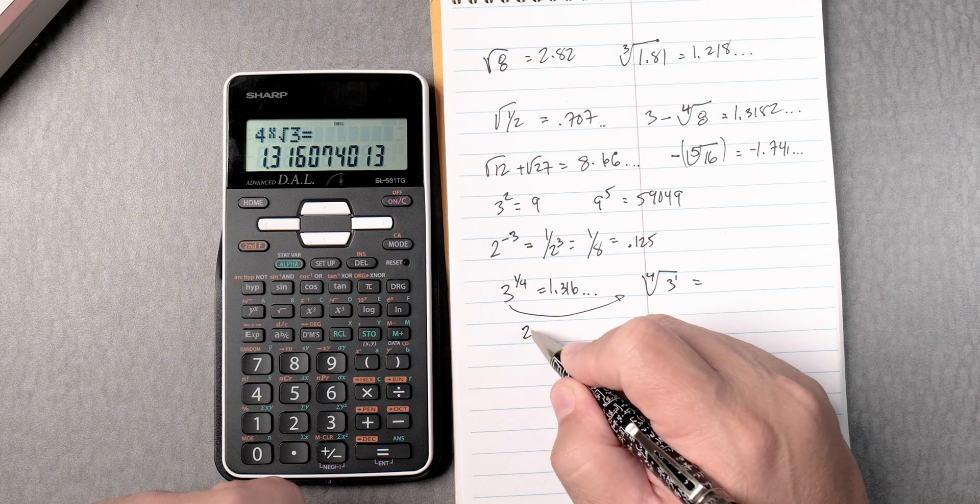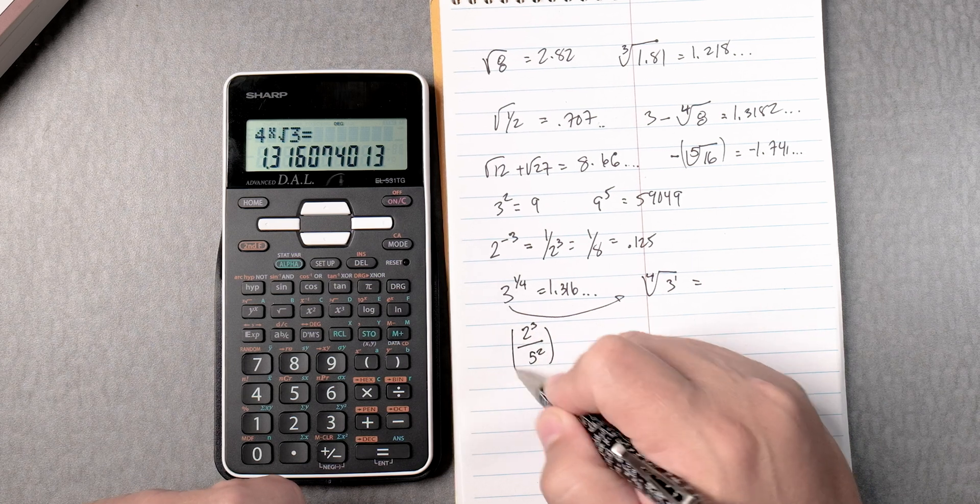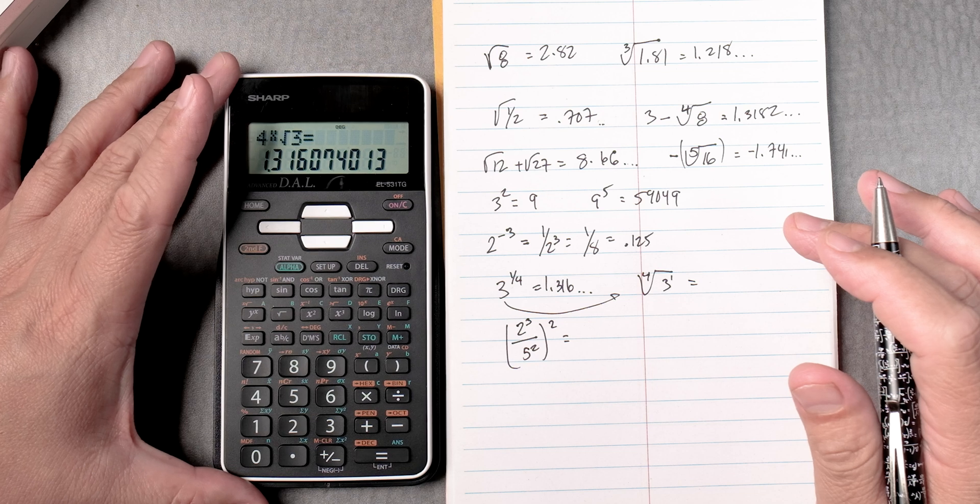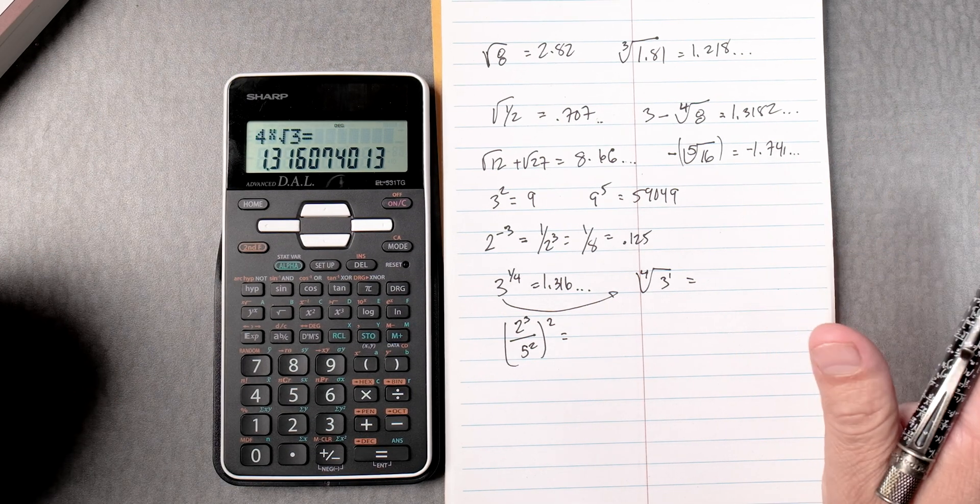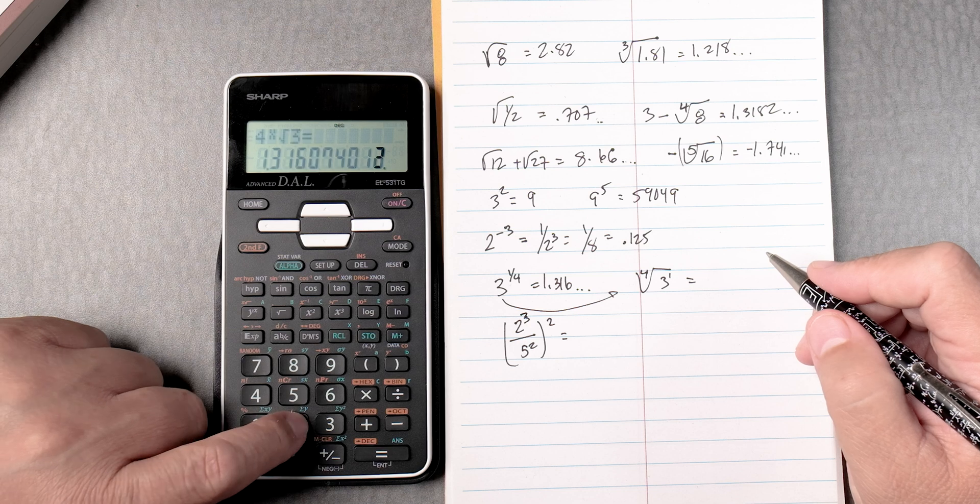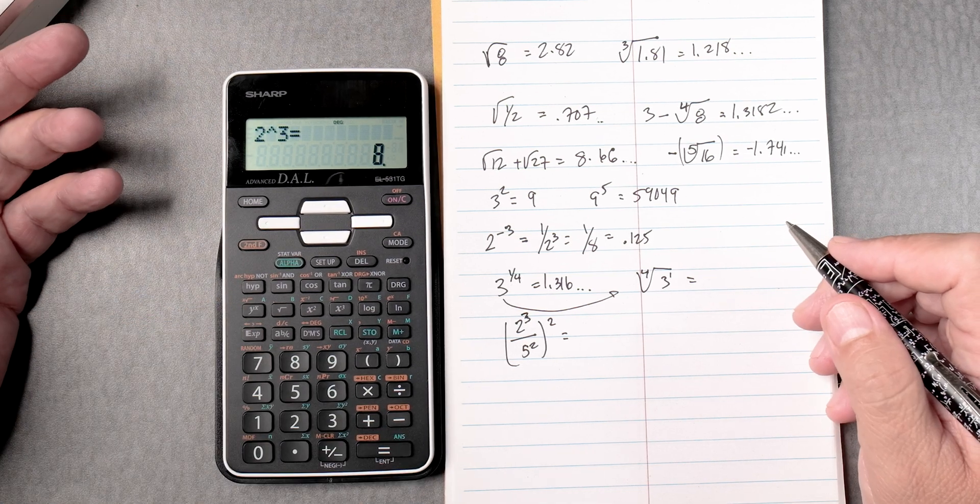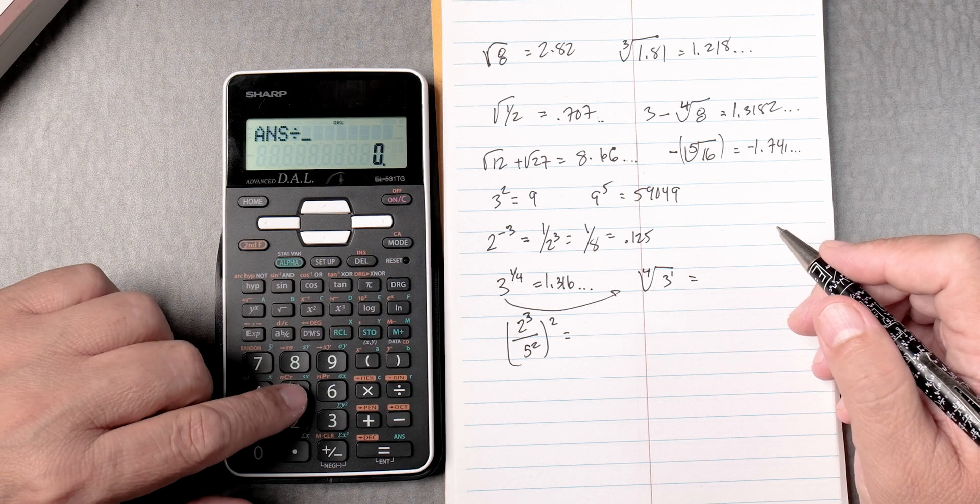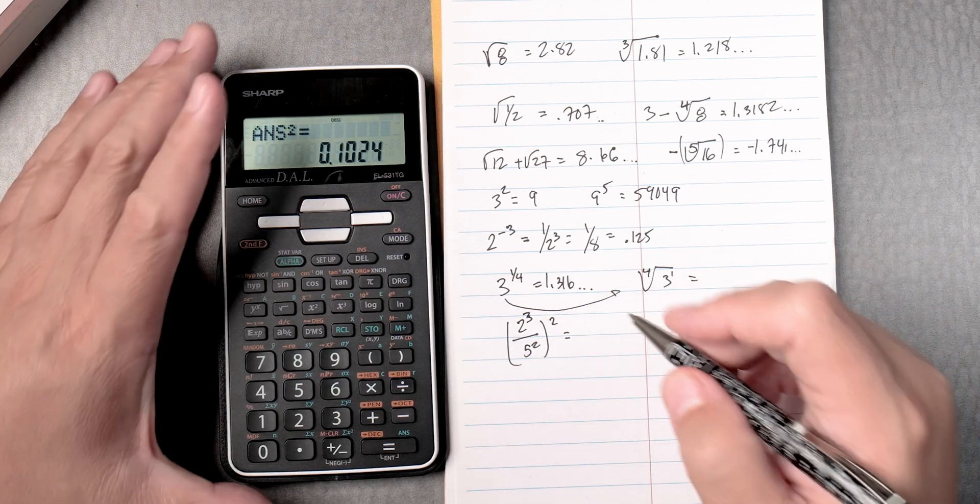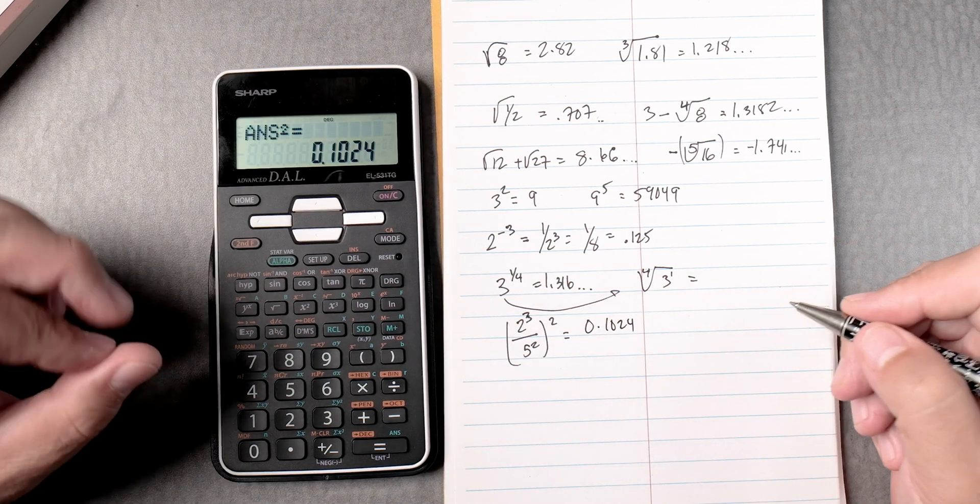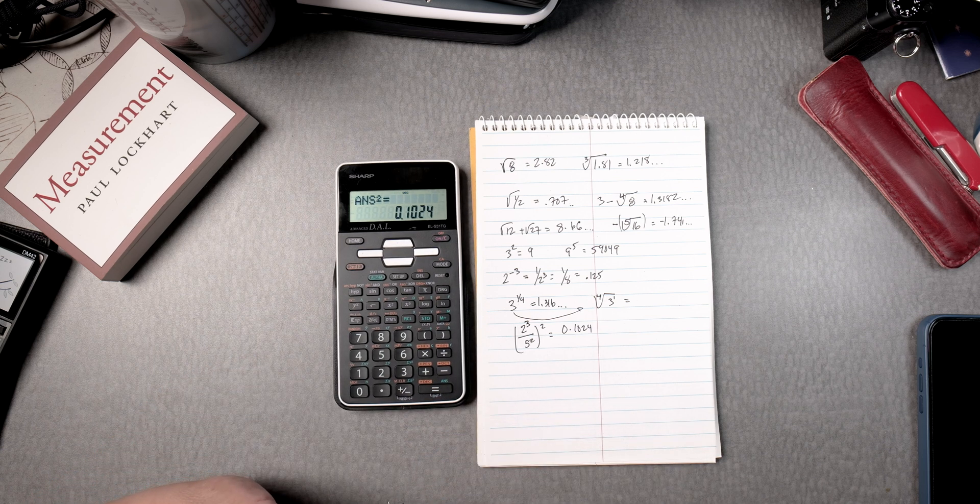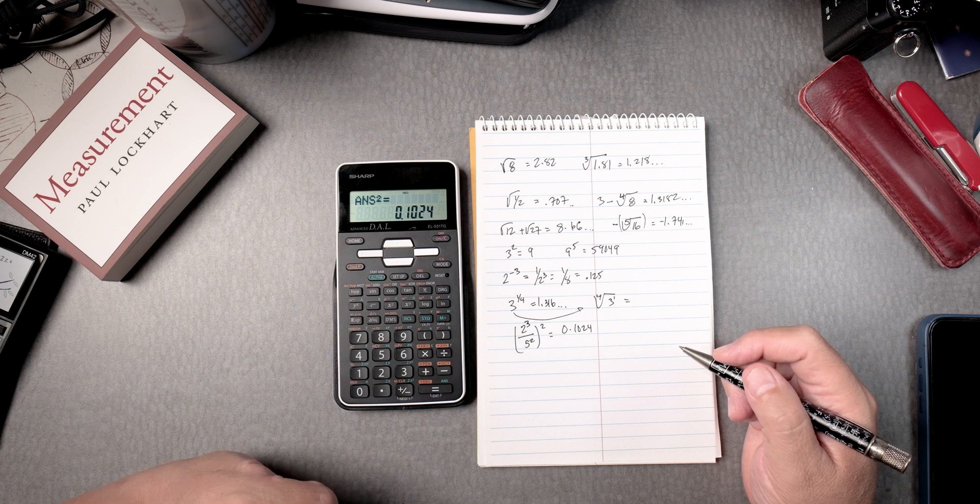This one is a little more challenging. 2 to the third over 5 squared squared. The way I would do this, because for whatever reason, this calculator is not so algebraic as I would like it to be, but it's just a different way of putting things. So 2, y to the x, 3. We press equals. Then we just say divide by 5 squared. We press equals, and then we square it, and then press equals. 0.1024. That is very important, pressing equals or enter, as you can see in the bottom right there. You need to be pretty aware of that.